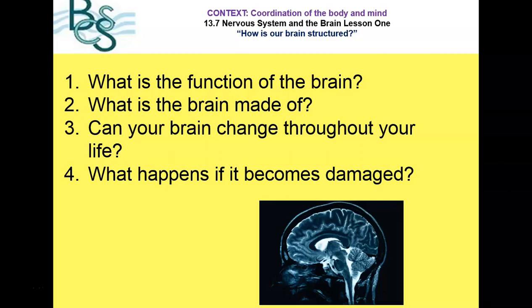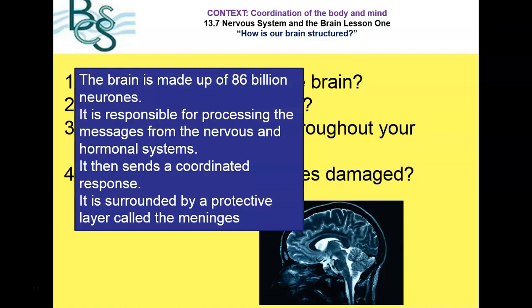Today's video is going to be about the brain. It's going to take you through the names of the parts of the brain you need to know for your A-level biology, and also what each of those parts does. The brain is part of the central nervous system, where information from the hormonal system and the nervous system is processed and acted on. The brain is made up of approximately 86 billion neurons and is surrounded by a protective layer called the meninges. Meningitis is an illness caused by an infection in your meninges.